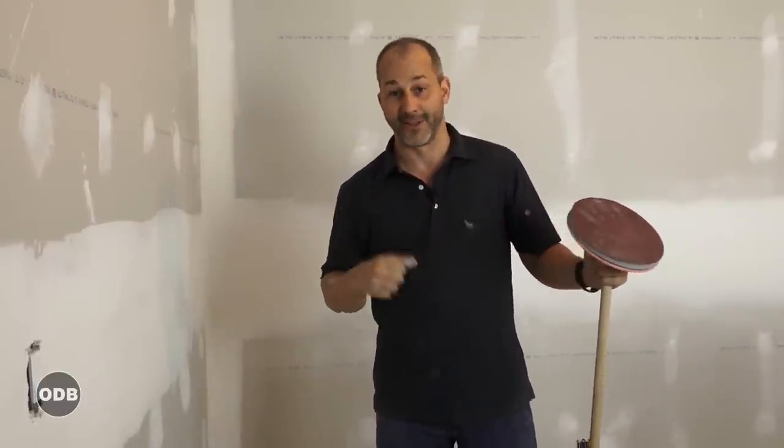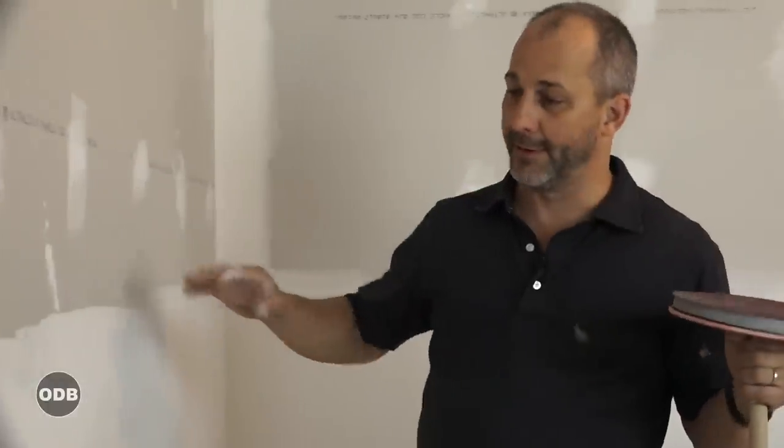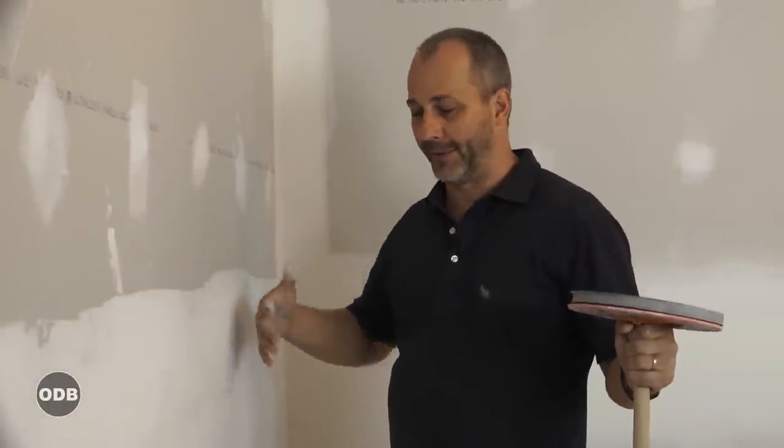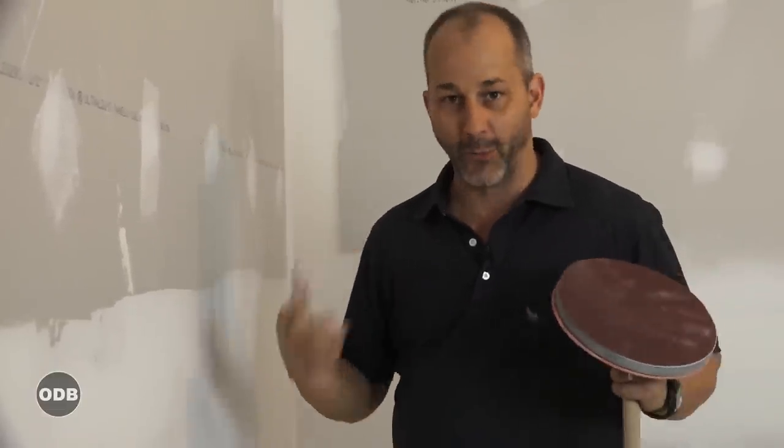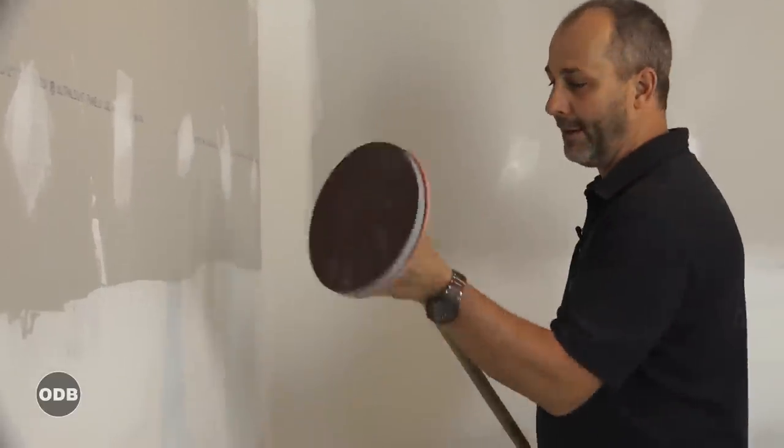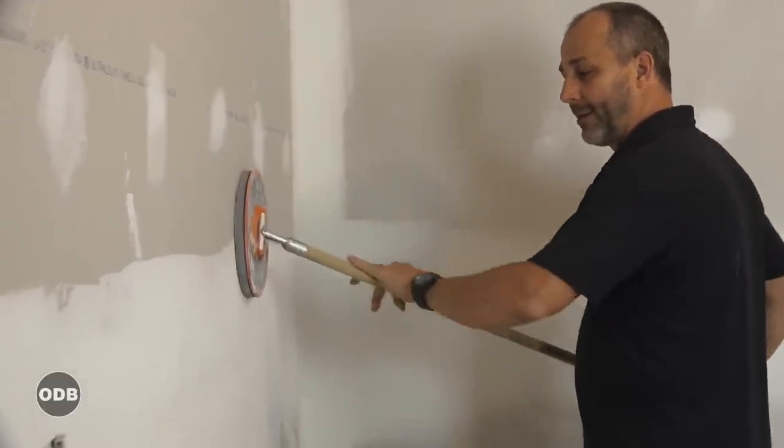Notice in our taping video when we're doing our mud joint, we're not trying to put it on real thick and then sand a whole lot off. We're trying to feather it out. We add water to our mud to thin it down so we don't have a whole lot of sanding to do. Really all we got to do is get our pad on there, and we're not trying to remove all of the mud. We're just trying to remove the ridge.